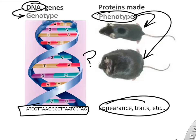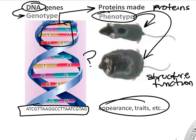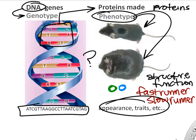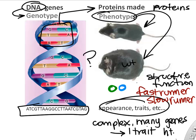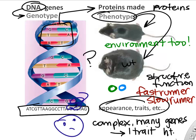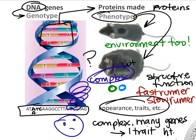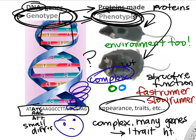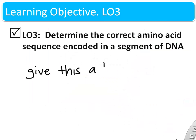I wanted you to think about a couple words: genotype and phenotype. Your genotype is your DNA sequence. Your phenotype is your appearance and your traits. They're linked by the fact that your DNA has the information to make your proteins, and your proteins then affect the structure and function of your cells and your body. Changing some of your proteins by changing some of your genes might make you faster or slower, taller or shorter. Throw in environment too and you can see it's very complex to go from your DNA sequence to your actual physical appearance — your phenotype.